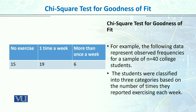Here is an example with data from 40 college students, in which we asked about their exercise habits — how much exercise they do. Looking at the numbers 15, 19, and 6: 15 people said they do not exercise, 19 people said they exercise once a week, and 6 people said they exercise more than once a week. Students are classified into three categories based on the number of times they report exercising each week.